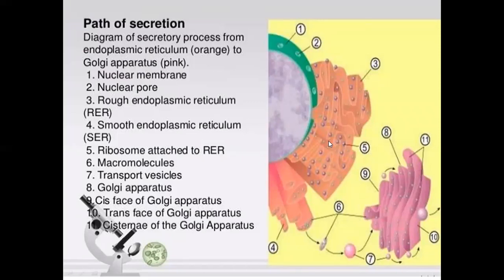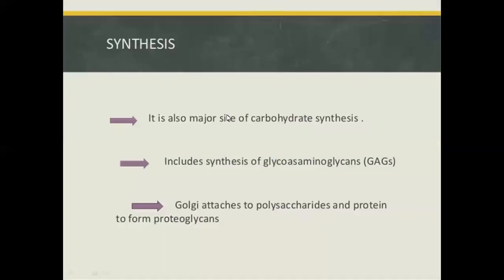Ribosomes attached to the endoplasmic reticulum pass material to the Golgi apparatus. The cis-face of the Golgi bodies receives material and the trans-face is the shipping side. These are the parts of the secretion pathway. Synthesis is also a major site of carbohydrate synthesis, including the synthesis of glycosaminoglycans. Golgi attaches polysaccharides and proteins to form proteoglycans.